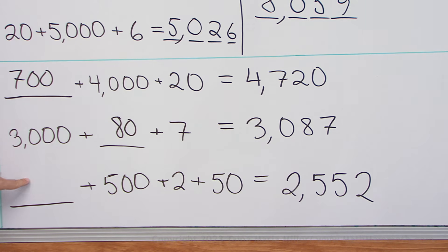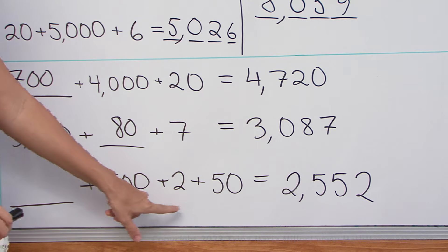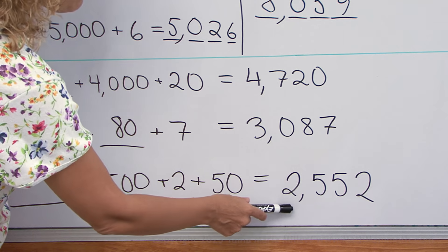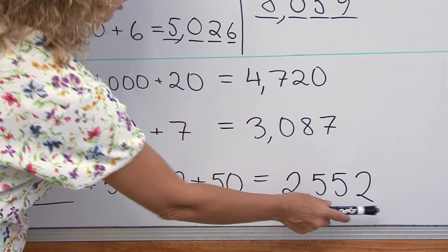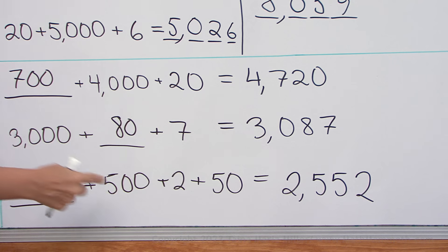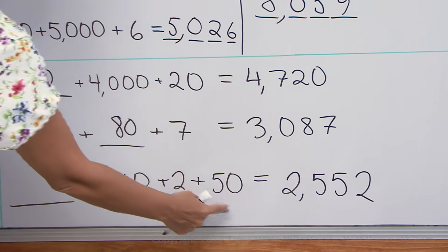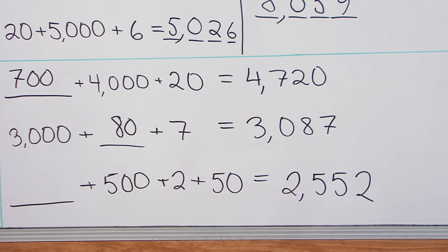And then something plus five hundred plus two plus fifty. And over here we have two thousand five hundred fifty-two. Okay, five hundred is there, two is there, fifty is there, so what's missing is the two thousand, right?